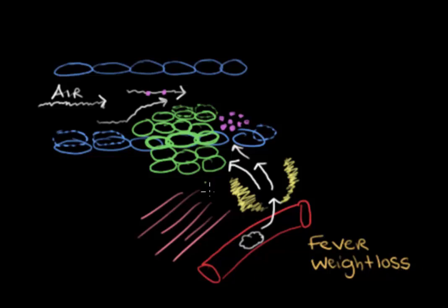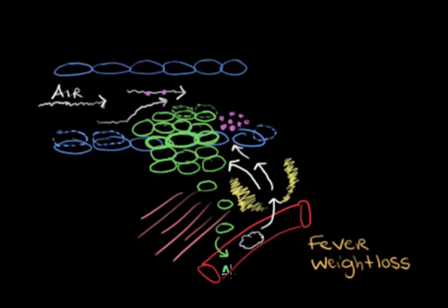Going back to the lung cancer cells — these cells produce an enzyme that breaks down tissues around them. This allows cancer cells to invade the lung tissue and surrounding structures. If they migrate to vessels like a blood vessel, they can gain access and travel throughout the body to other organs in a process called metastasis, forming secondary cancers at those sites.